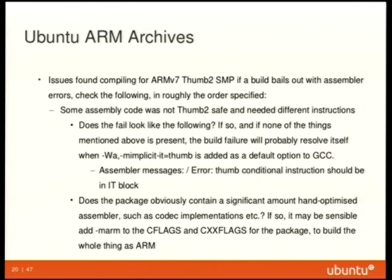For hand-optimized assembly and codec implementations, we just built them as ARM. If we were the experts in the codecs we might have tried Thumb2. Linaro is looking at many of the codecs and rewriting some of them to fix this. But if you're stuck with a lot of old assembly code, you can compile it as ARM straight and go for 32-bit — you don't get the advantage of Thumb, but you get working code.